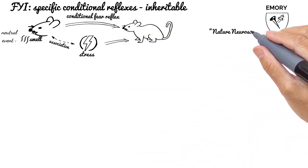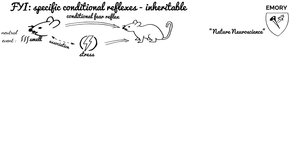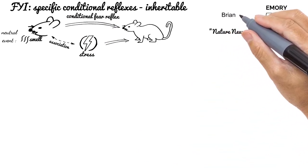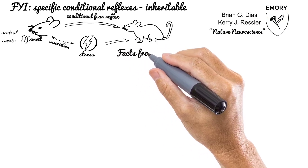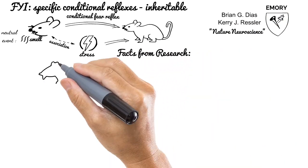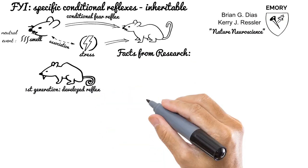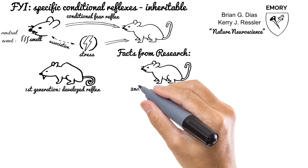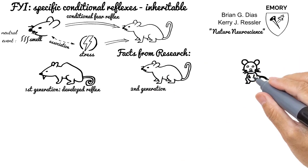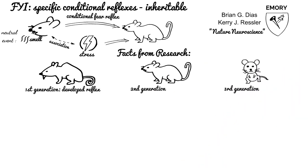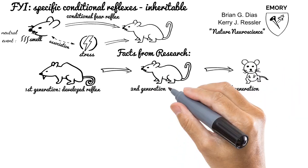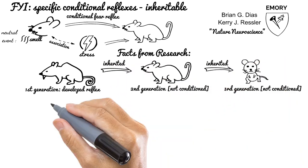It was published in Nature Neuroscience on December 1st, 2013, in the article by Brian Diaz and Kerry Ressler. Three interesting observed facts from their lab research: First mice generation developed conditional fear reflex to certain odor, and it was verified to be inherited by two following mice offspring generations. Please note that offspring mice were not conditioned for such odor. Reflexes were inherited.